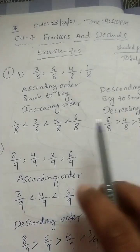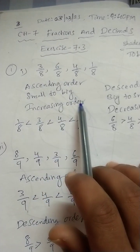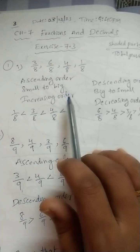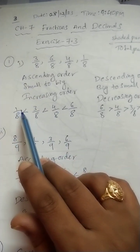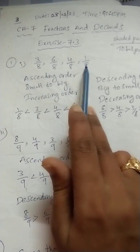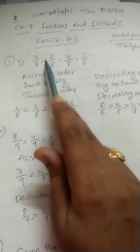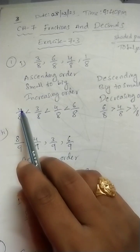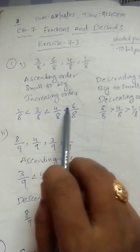Now we should write in ascending or descending order. Ascending order means small to big — increasing order. We have 3 names for ascending order: ascending order, small to big, increasing order. Here, the small number among all the numerators — since these are like fractions, just compare the numerators. 1 is the smallest, so: 1 by 8 less than 3 by 8 less than 4 by 8 less than 6 by 8. These are from small to big, means increasing order.